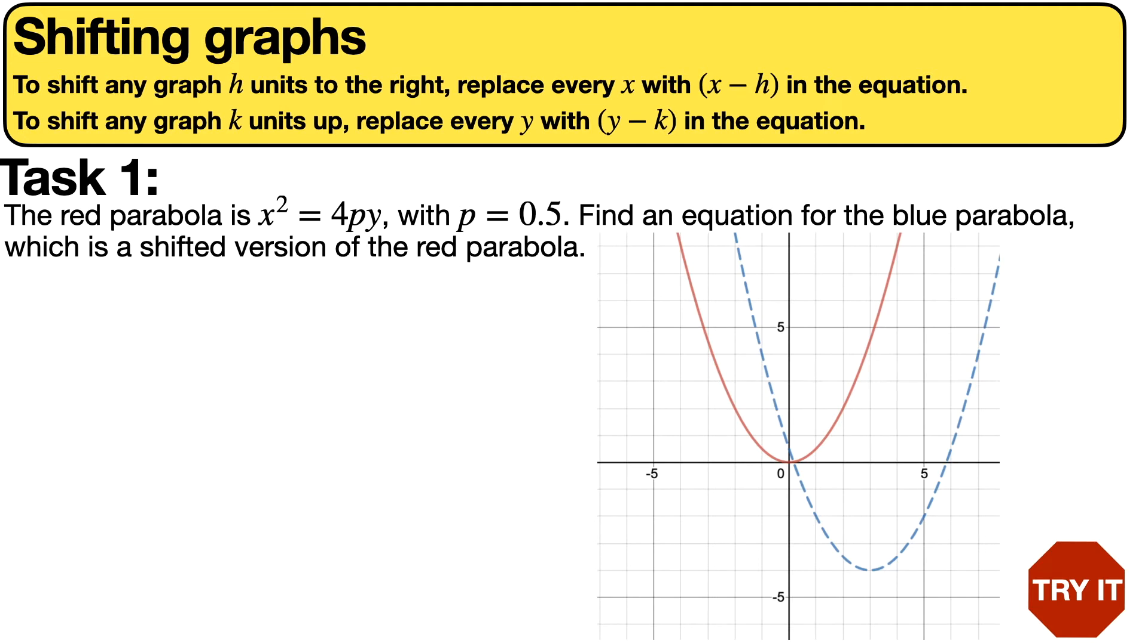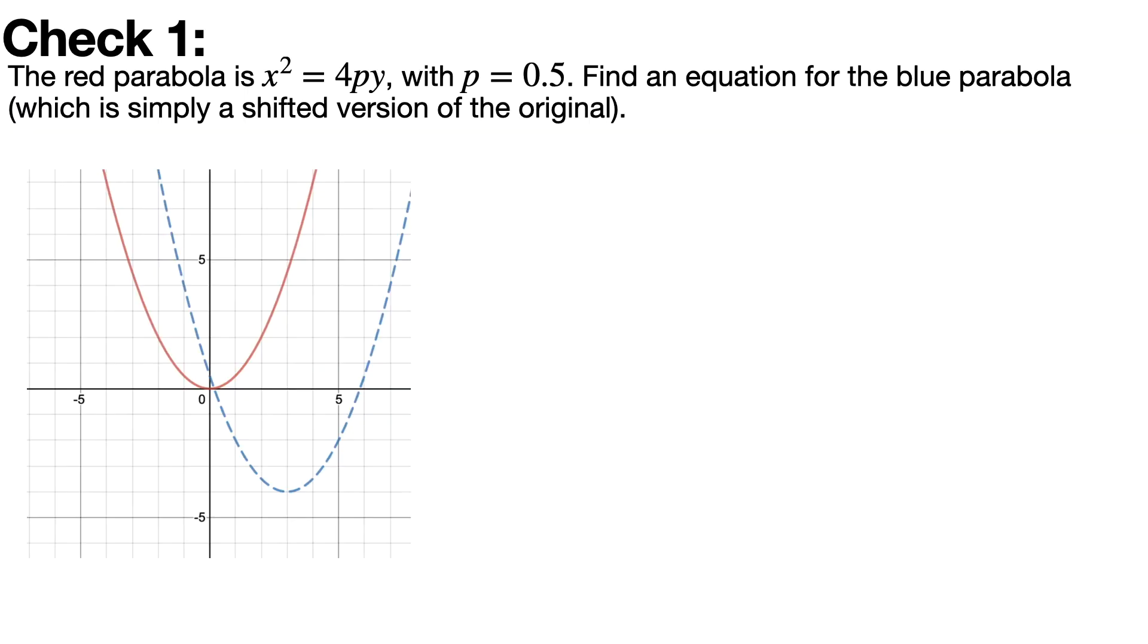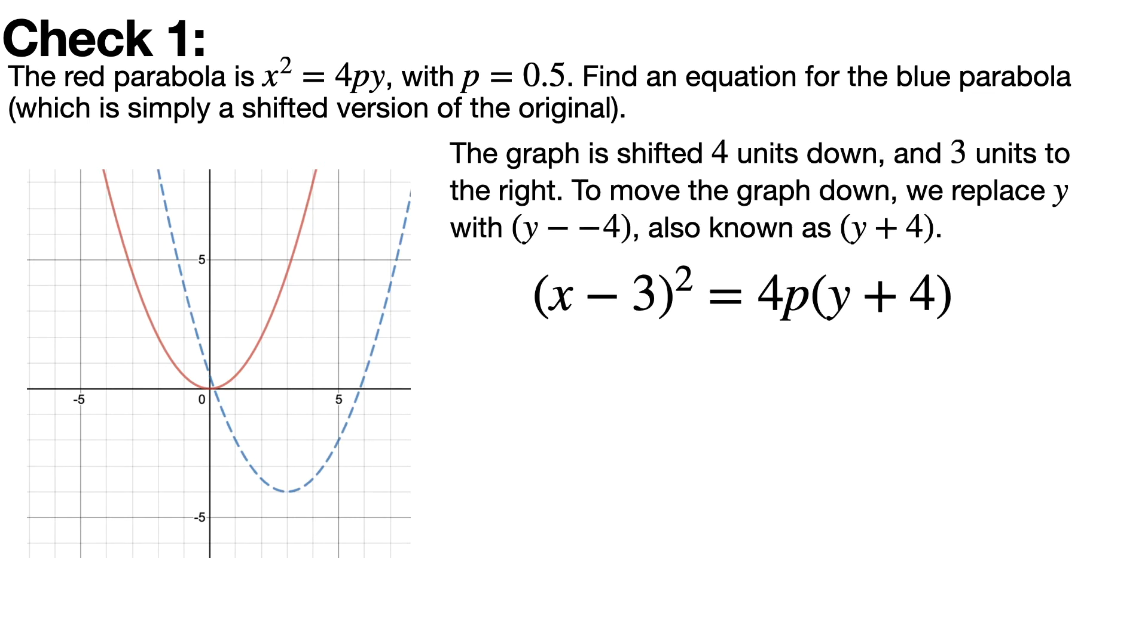So we start off with the red parabola of x² = 4py. And the blue parabola is the red parabola shifted 4 units down and 3 units to the right. To move the graph up, we replace y with (y - something). So to move it down, we replace it with (y + something), or we can view it as replacing it with (y - negative number) because we're moving in the opposite direction.